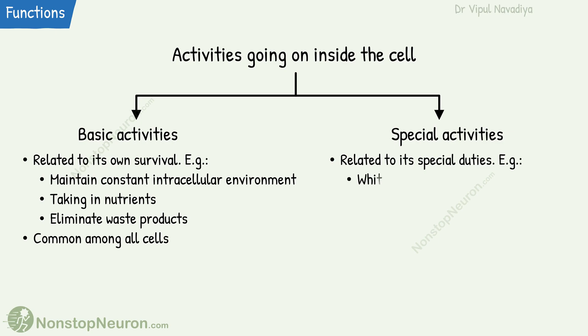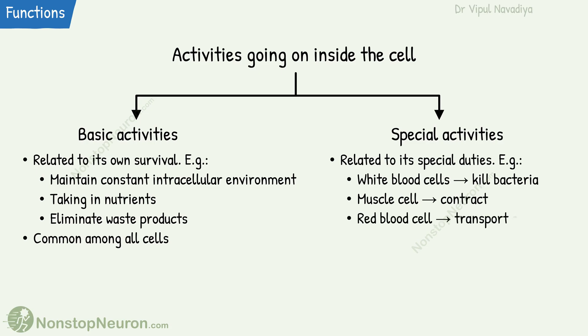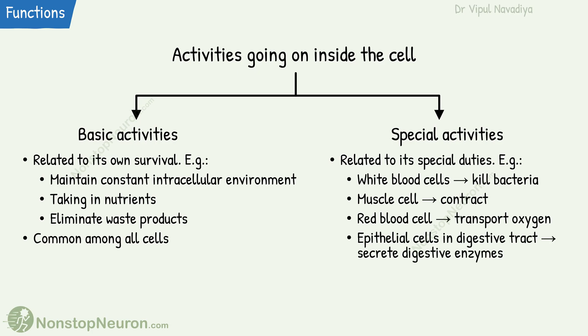For example, white blood cells kill bacteria, muscle cells contract the muscle, red blood cells transport oxygen, and epithelial cells in the digestive tract secrete digestive enzymes. For such specialized activities, specific genes are expressed in specific cells only.